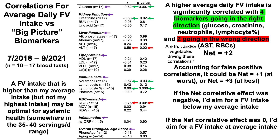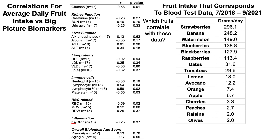This data doesn't indicate whether fruit or vegetables are driving these correlations, so just as the meta-analysis separated fruit and vegetables, let's look at correlations for my average daily fruit intake versus the big picture biomarkers. A higher average daily fruit intake is correlated with three biomarkers going in the right direction: glucose, neutrophils, and the percentage of lymphocytes. Two biomarkers are going in the wrong direction: lower platelets — which decline during aging and lower levels associate with increased mortality — and lower red blood cells.